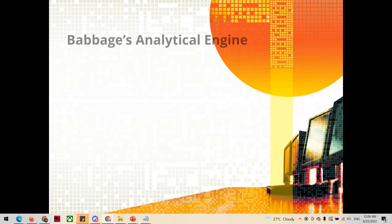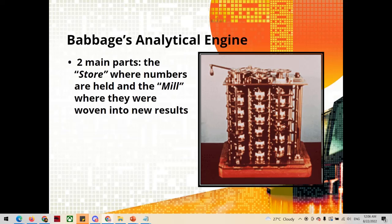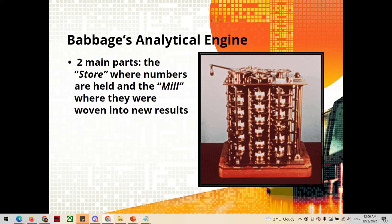Babbage's analytical engine had two main parts: the store, where the numbers are held, and the mill, where they will be woven into new results.